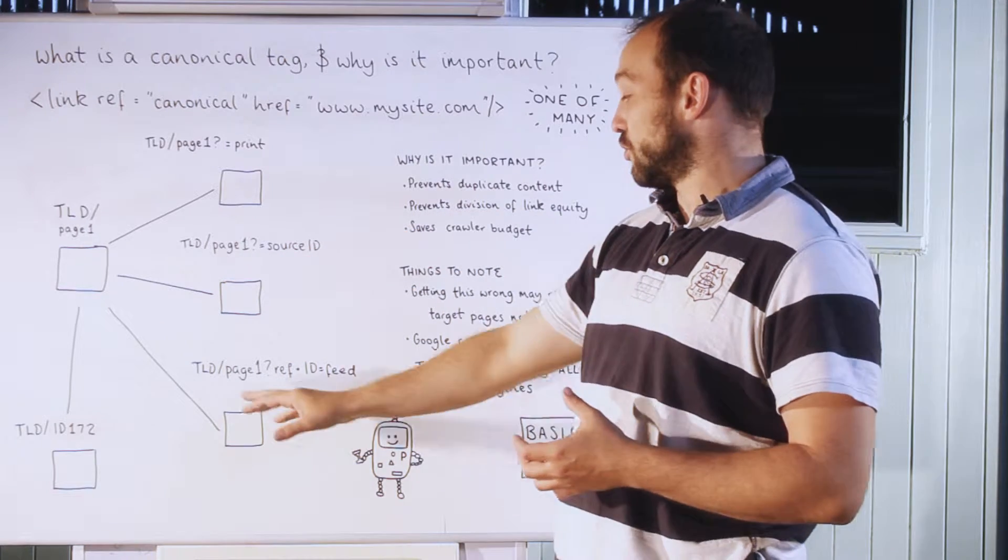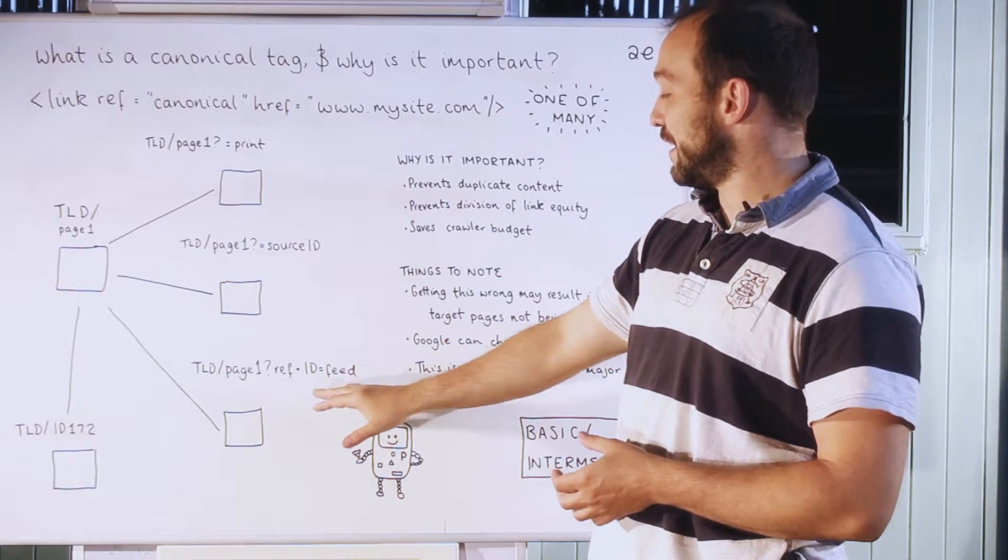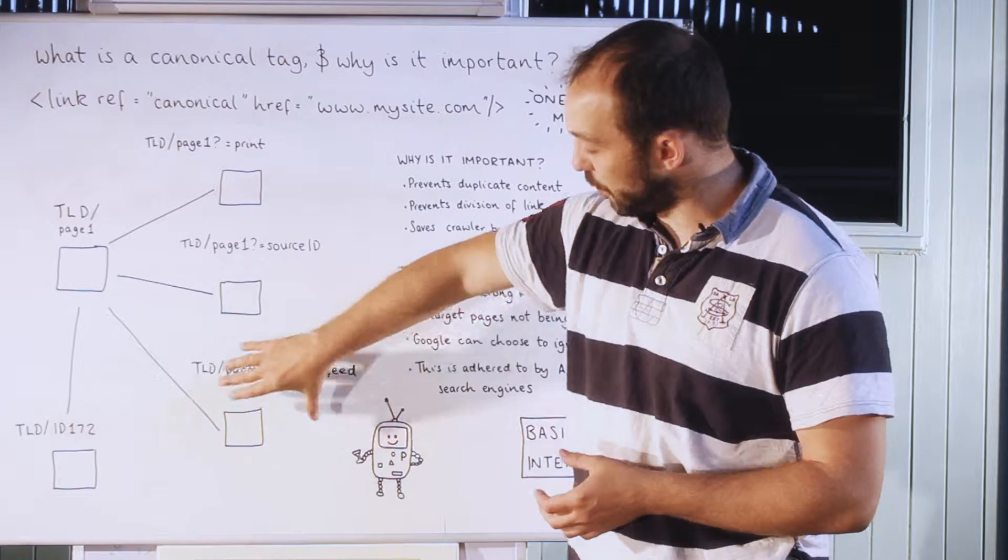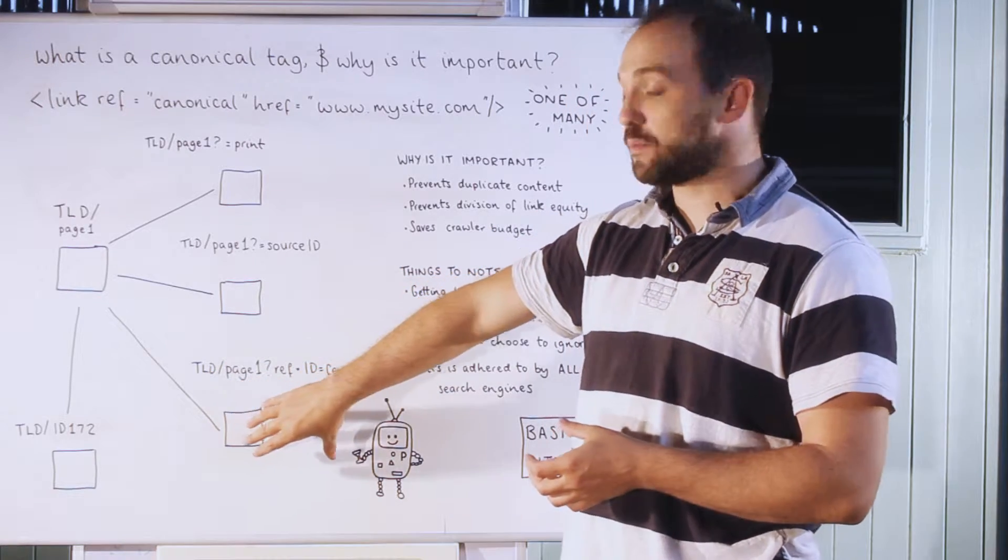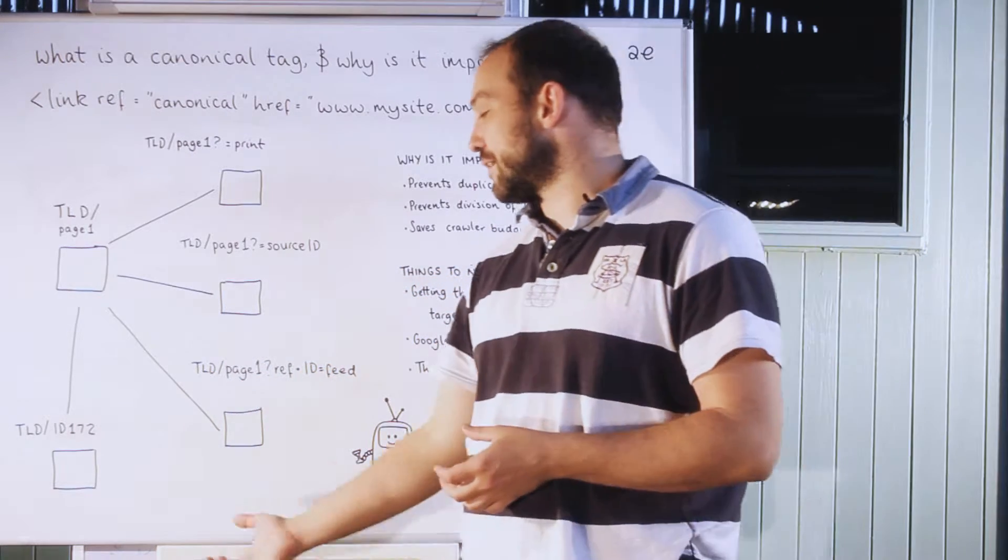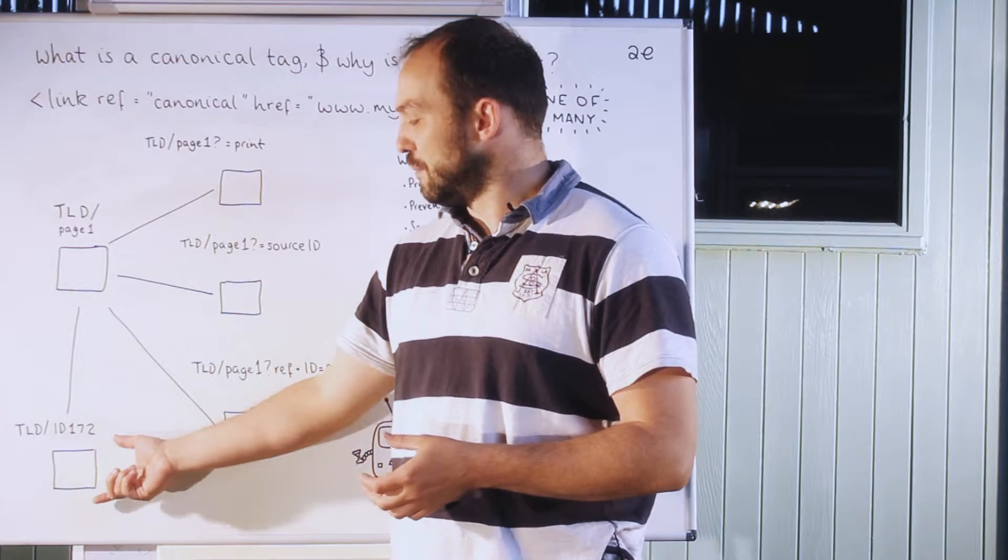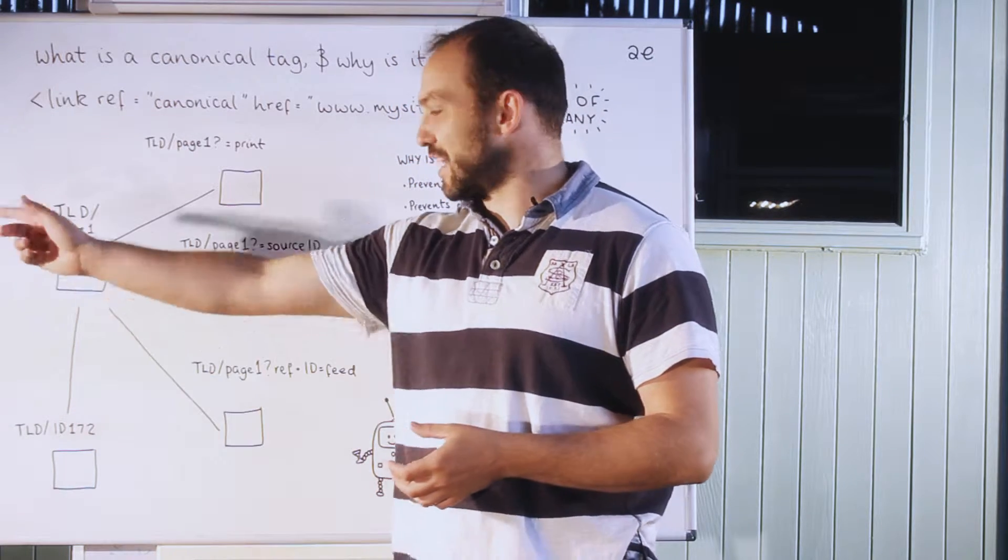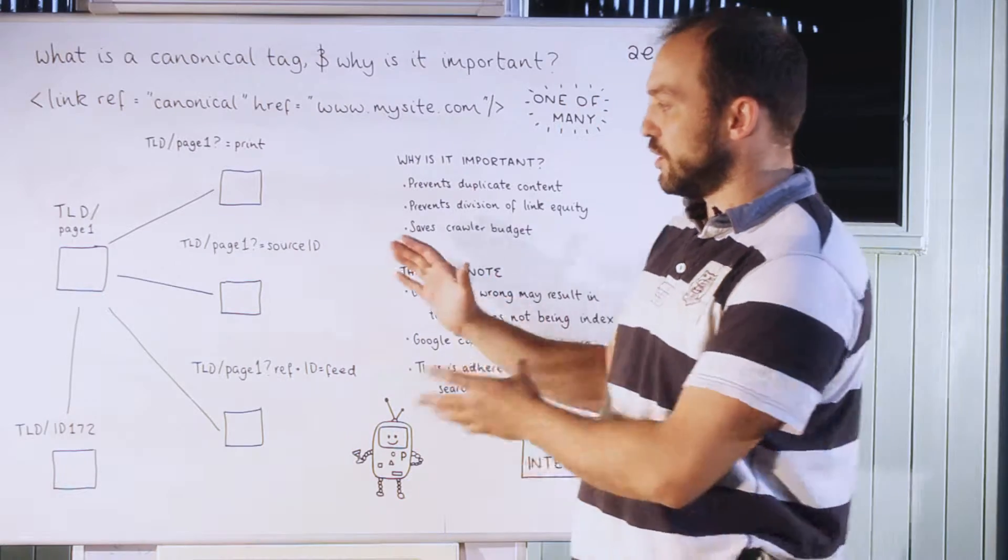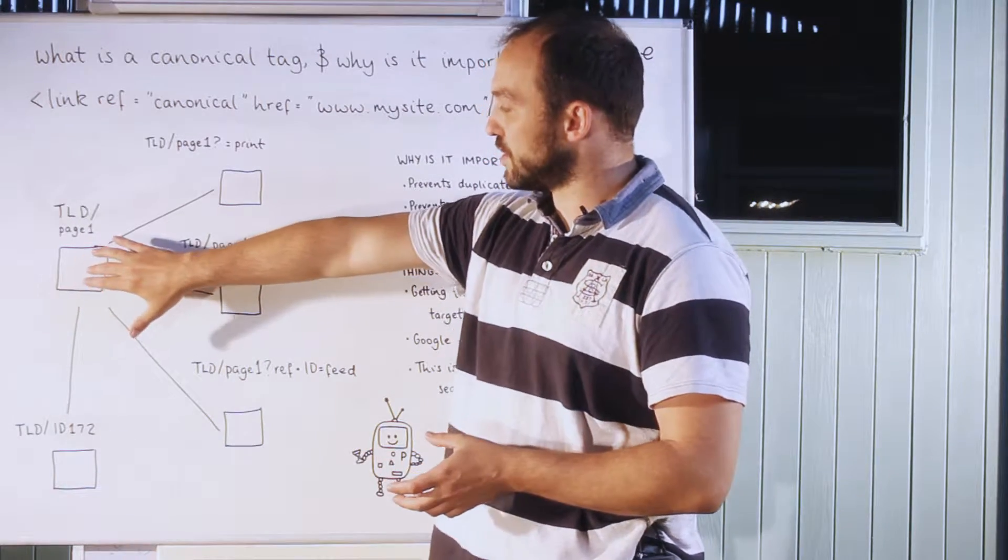It can also be duplicated by RSS feeds, so here's a thing saying that belongs to an RSS, it gives you another duplicate version. And some CMS's will also create a duplicate version based on an ID number which is attached to the database.